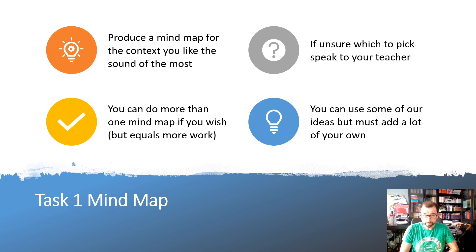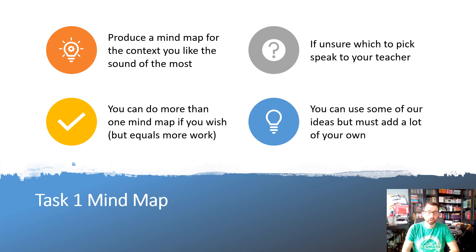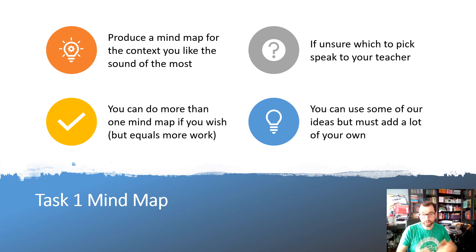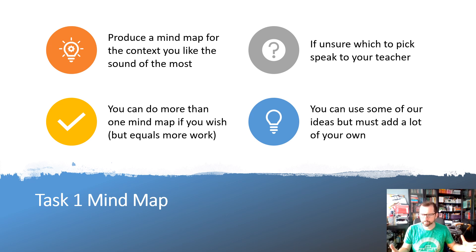The task for today's lesson is to produce a mind map for the context you would like the sound of most. If you can't decide between context two or context three, you can do two mind maps, but I expect two good mind maps — not two rubbish ones — because you're doing twice the work. So try to pick one and do one good mind map. You can use all the ideas we're throwing out in this PowerPoint, or any still on the whiteboard in T1, but you need to add to them. If you only copy what I've done, I can't give you any marks.